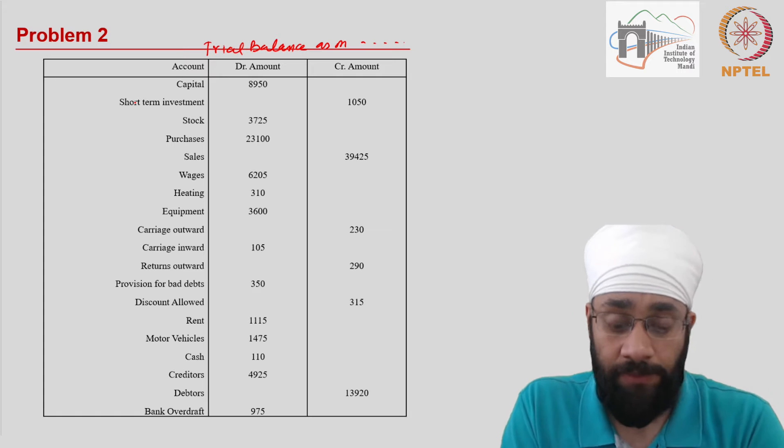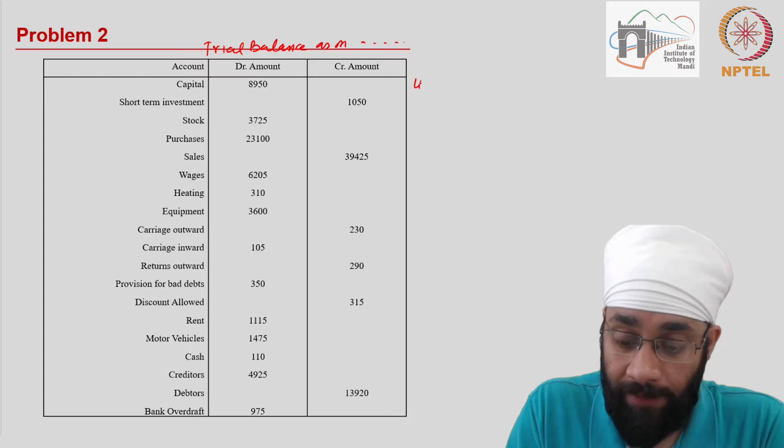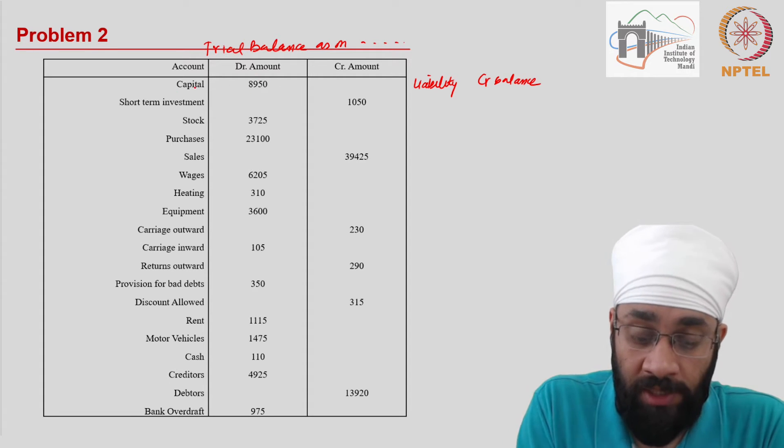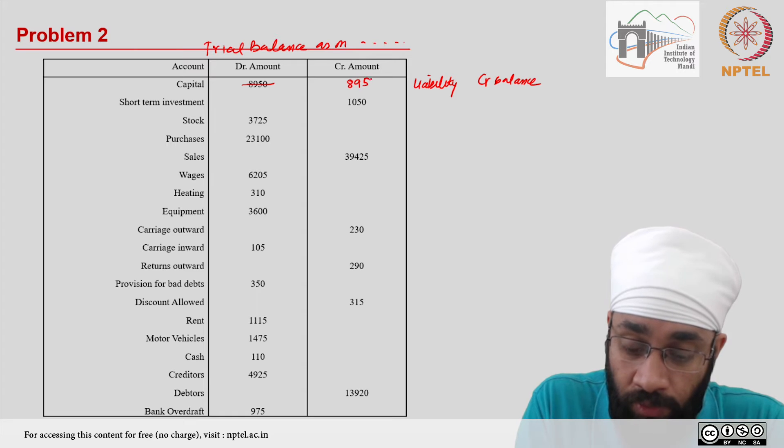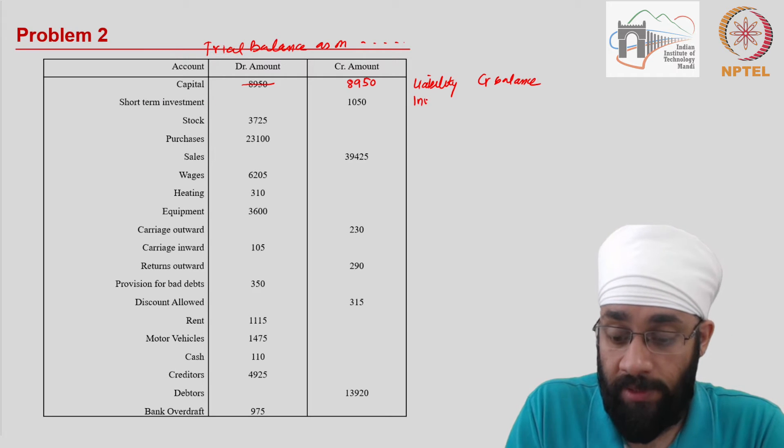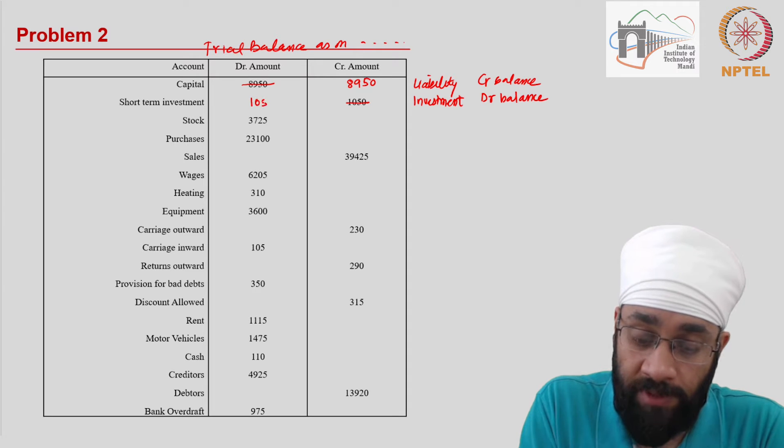Let us look at these items one by one. Capital. Well, capital is a liability. All liabilities have a credit balance in their ledger account. However, this trial balance shows the amount of capital on the debit side, which is not possible. So we are going to move this to the credit side. Then you have short-term investment. This is an investment. All investments are assets, and assets have a debit balance. We need to move this to the debit side.